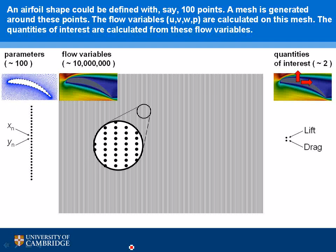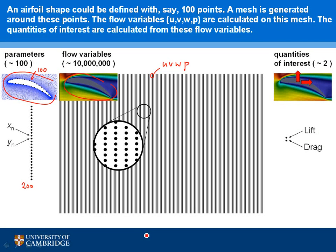Each black dot represents a piece of information — a degree of freedom. With a hundred points, each having an X and Y position in 2D, we have 200 parameters at the start. We then create the mesh and solve for the flow variables, which might give us 10 million degrees of freedom — U, V, W, and P on every grid point. Whether that's 100,000, a million, or a billion doesn't change the main point: there are many more flow variables than parameters. After calculating all those flow variables, we dissolve them down into just two things we care about: lift and drag. So we started with 200 things to change, ended with two quantities of interest, and computed 10 million things along the way.